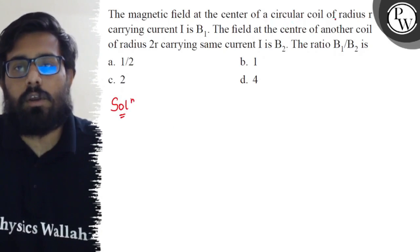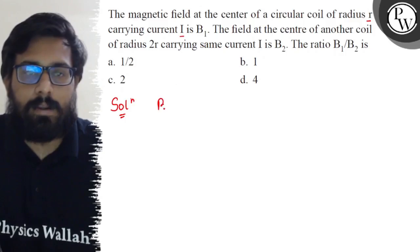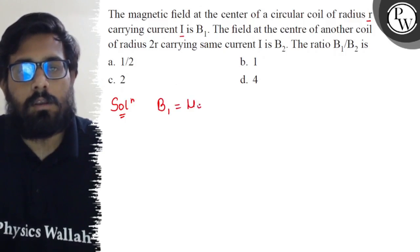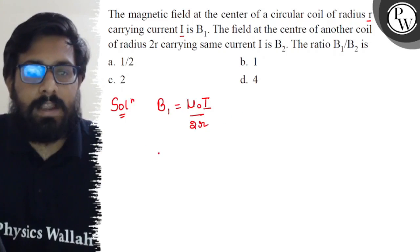field at the center due to a circular coil of radius r carrying current I is B₁. So B₁ can be written as μ₀I upon 2r. Okay, then B₂ can be written as